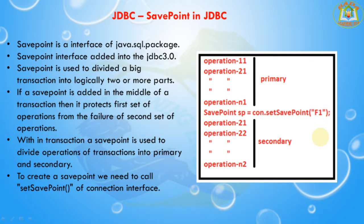If the SavePoint is added in the middle, we can either cancel the entire transaction or cancel only the secondary part. Within a transaction we can put any number of SavePoints. If you roll back a top-level SavePoint, all the SavePoints below it are also rolled back. Rolling back the primary SavePoint causes the primary operations and all secondary operations to be rolled back as well.